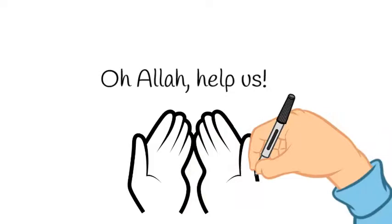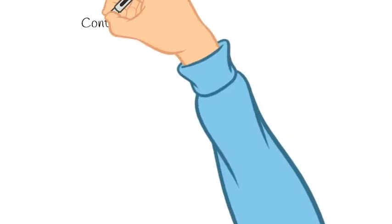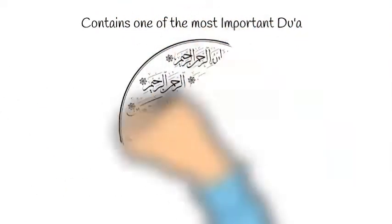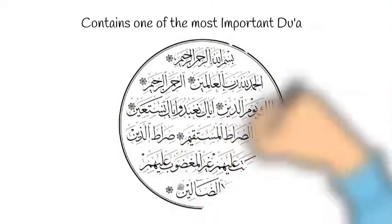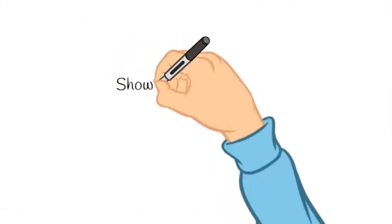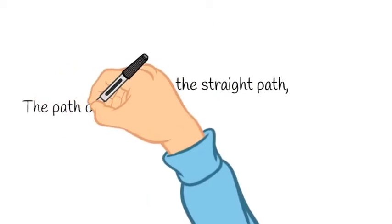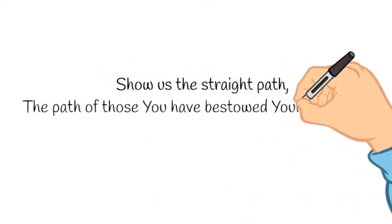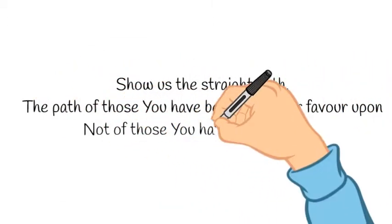This Surah, which we read every time we pray, has a very important dua: 'Ihdina al-sirat al-mustaqeem' - show us the straight path. The path of those whom You have bestowed Your favor upon, not of those who You have been angered upon, nor those who have gone astray.